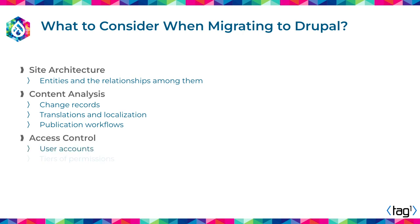In terms of access control, there are user accounts and tiers of permissions. You can see it from two points of view. From one perspective, if I am a consumer of the newspaper, I have an account because I subscribe, and because of my subscription I get access to a certain amount of content. But internally, there are people creating the content, and those people also have different sets of permissions and access control. All of that ties together into site architecture, content analysis, and access control.